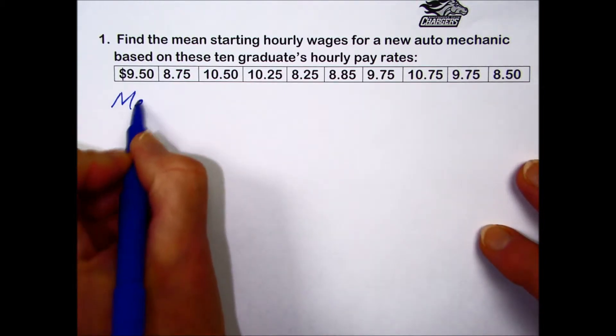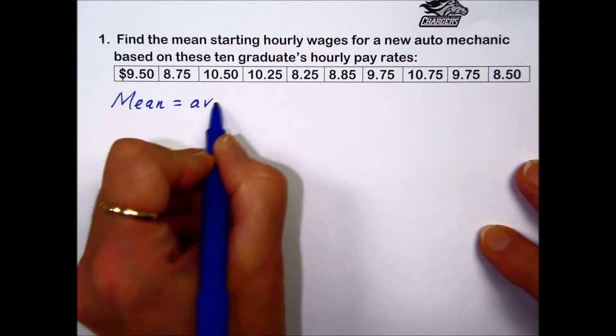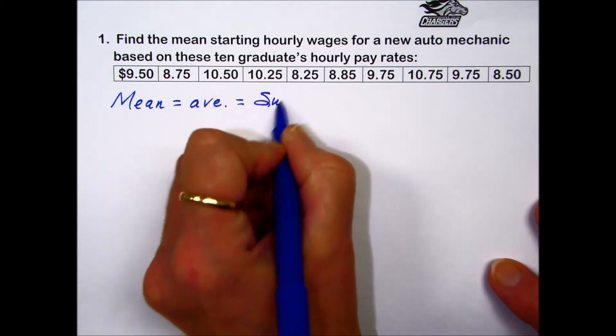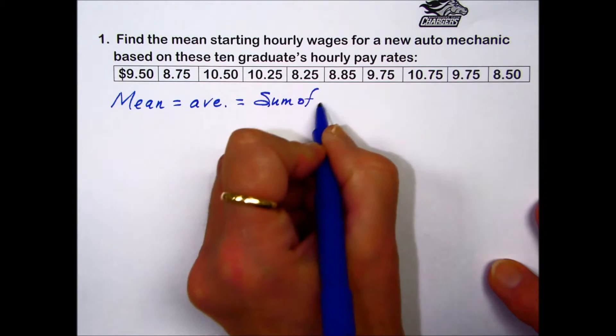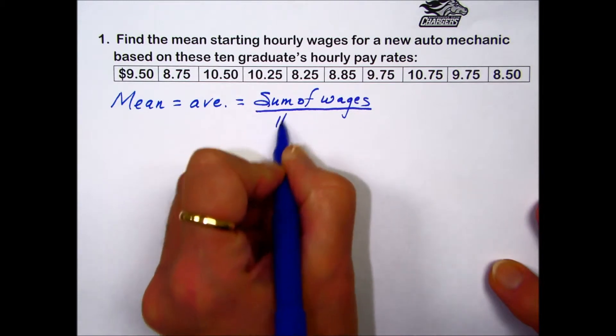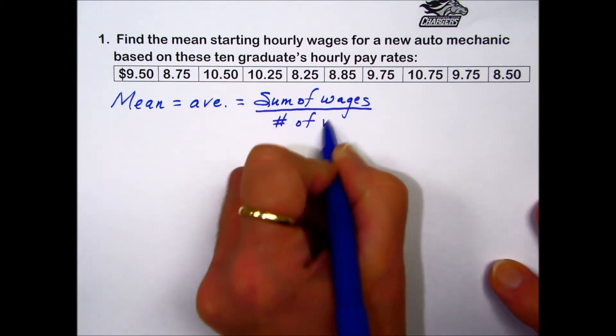Mean can also be called average, and to find the average, we're going to find the sum of the hourly wages divided by the number of wages.